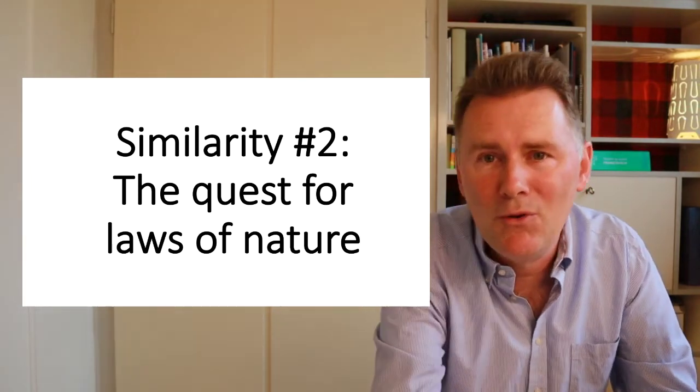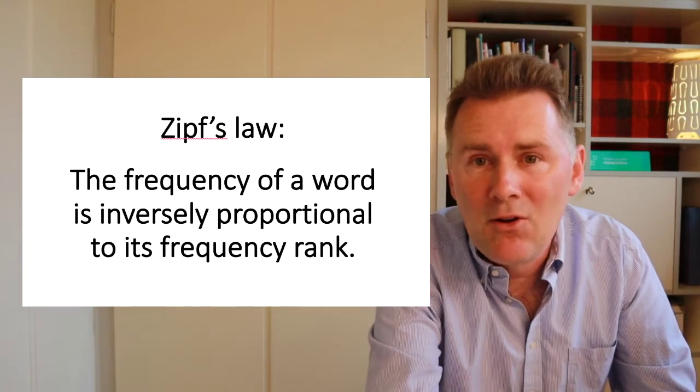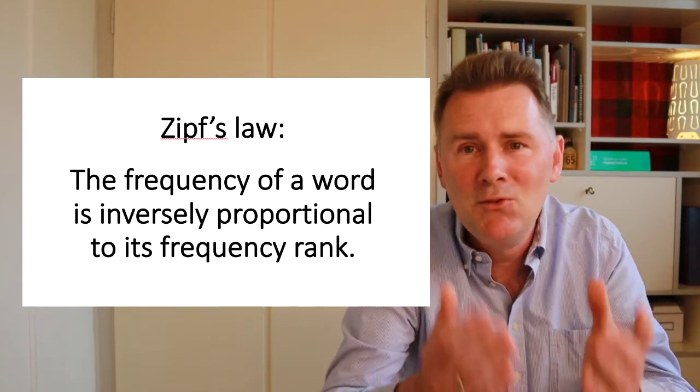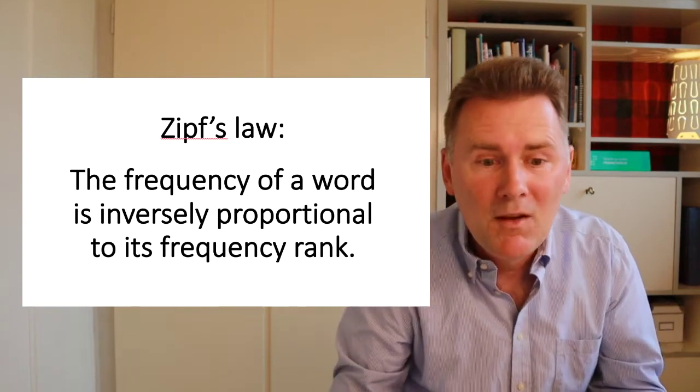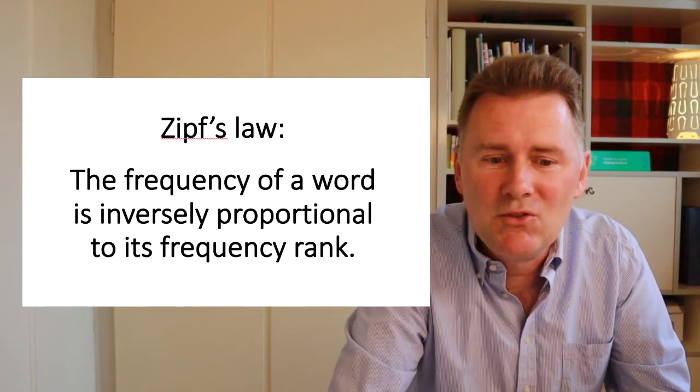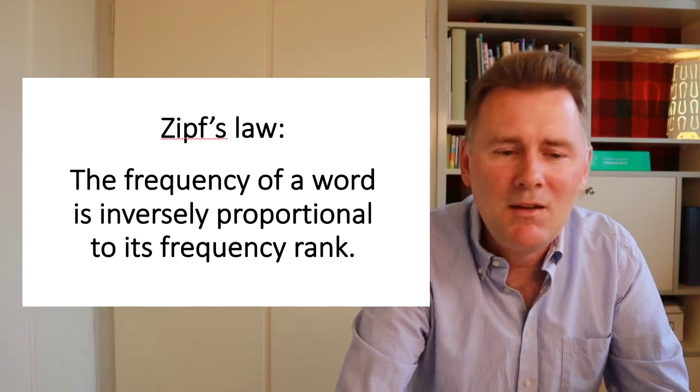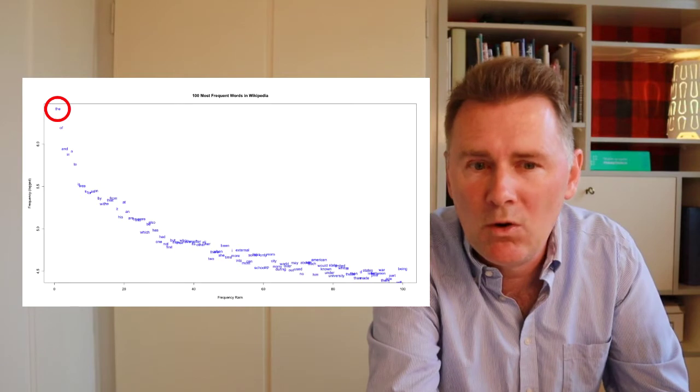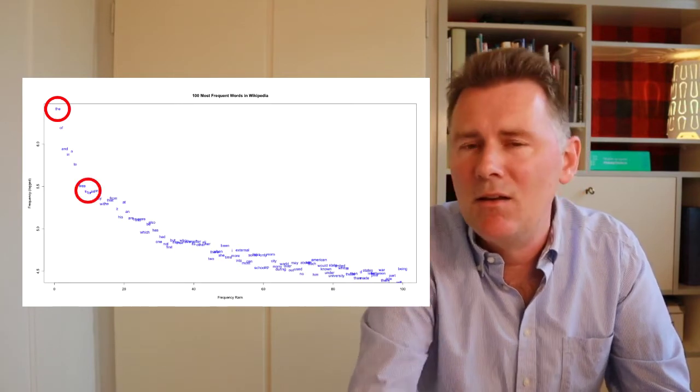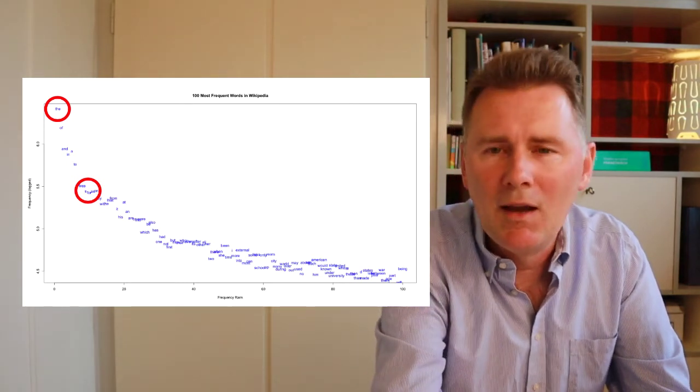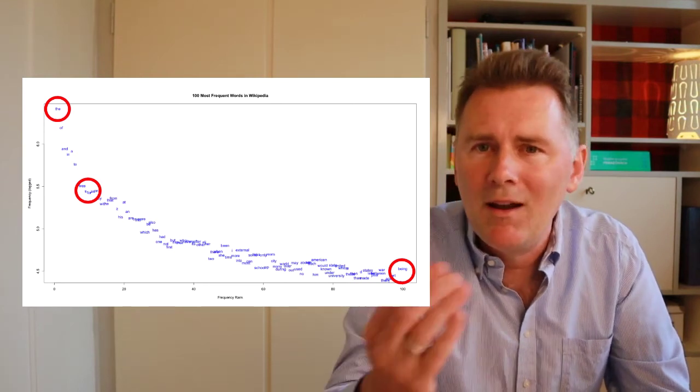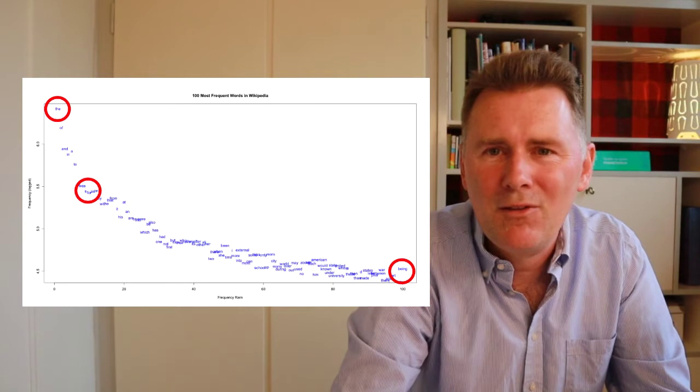Are there any linguistic laws of nature? Well, there actually are linguistic insights that can be expressed and formalized mathematically. One example is what's known as Zipf's law. Zipf's law states that in any body of text, in any book, in any newspaper, in any newspaper article, the frequency of a word is inversely proportional to its frequency rank. That means, in a nutshell, that the most frequent word in a corpus is ten times more frequent than the tenth most frequent word, and it is a hundred times more frequent than the hundredth most frequent word, and so on and so forth. That's Zipf's law.